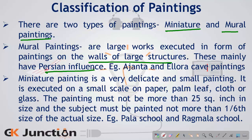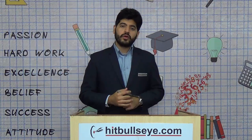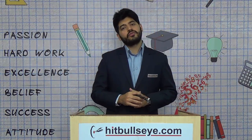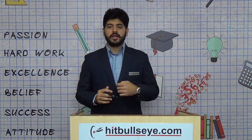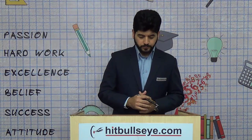Certain examples of mural paintings are at the Ajanta and Elora caves. In the caves, they would first plaster the walls and then apply their paintings upon them.